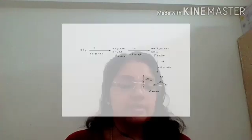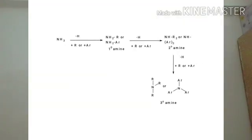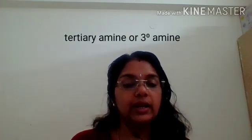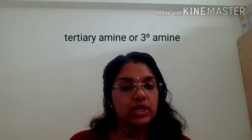When we consider the tertiary amine — that is, when we replace one more hydrogen atom from the secondary amine by an alkyl or aryl group — we get R3N or Ar3N. These amines are termed tertiary amines or 3° amines, and the main functionality present in every tertiary amine is the tertiary nitrogen, respectively.